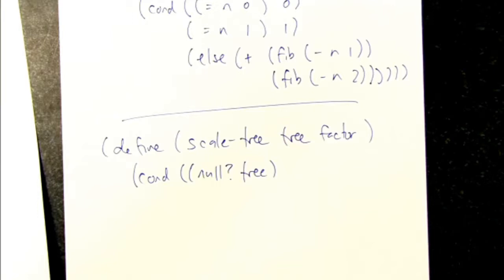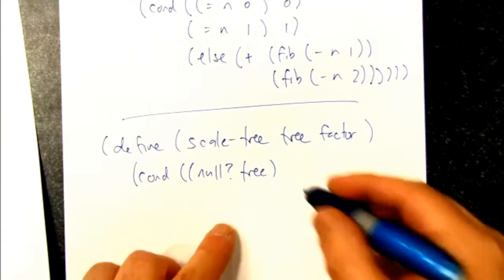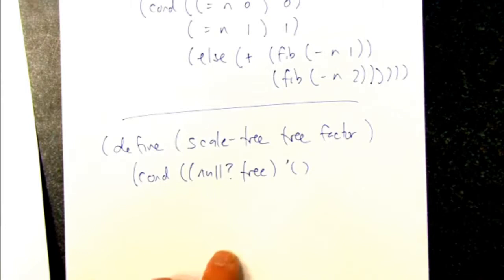Because we're going to, thinking ahead to the combiner, instead of adding up the elements, we're going to be re-consing them together. So the result of scaling a null tree is null. We create a new null object and hand it back.